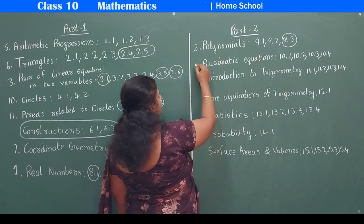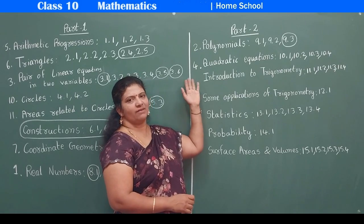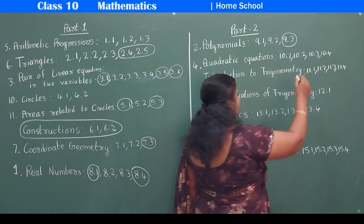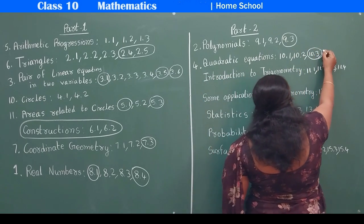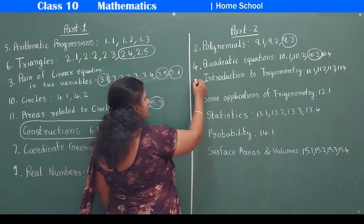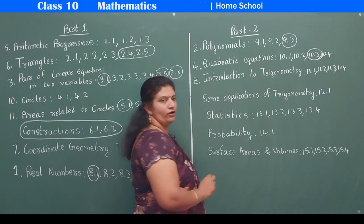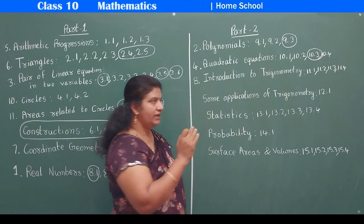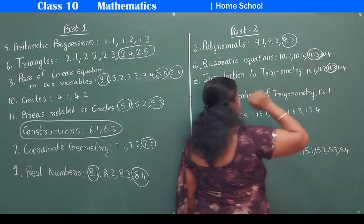Coming to Quadratic Equations, chapter number 4. We used to have four exercises, but for the present year we don't have the third exercise — only exercises 4.1, 4.2, and 4.4 are there for the syllabus. The next chapter, chapter number 8, is Introduction to Trigonometry. We used to have four exercises, but for this academic year, exercise 11.3 is not there.